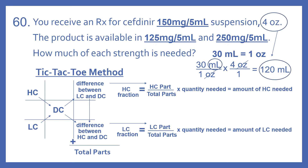With the tic-tac-toe method, we take our tic-tac-toe grid. The top left will be the high concentration, the center will be the desired concentration, and the bottom left will be the low concentration. Diagonally, we take the difference between those values. The difference between the low concentration and desired concentration goes in the top right; the difference between the high concentration and desired concentration goes in the bottom right. We add that column to get total parts, then form fractions: HC parts over total parts times quantity needed gives the amount of HC needed, and LC parts over total parts times quantity needed gives the amount of LC needed.